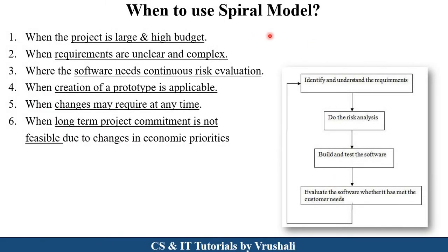When should you use the spiral model? First, when the project is large and high-risk. Second, when customer requirements are unclear, complex, and continuously changing. The most important case is when risk evaluation is needed — if a project has lots of risk, the spiral model is used, creating a prototype to solve risk problems. Also, there is no fixed deadline because customer requirements are continuously changing, and the spiral may go into an infinite loop.